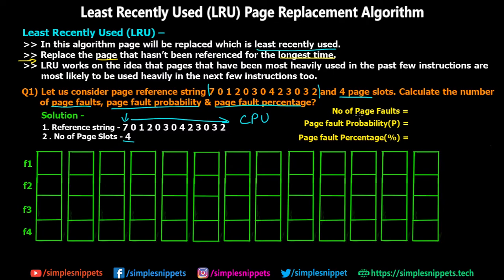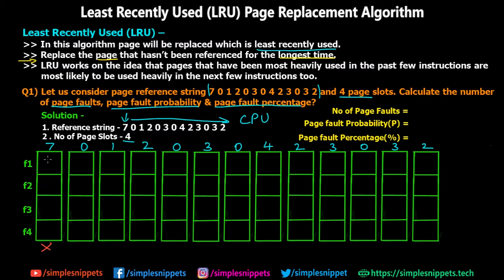Let me write down all the page reference string values for each step. Starting with step one: the CPU wants page 7, all frames are empty, so a page fault is generated and page 7 is brought into main memory from virtual memory. In step two, page 0 is requested but not present, so another page fault occurs and page 0 is loaded. Steps three and four similarly generate page faults as new pages 1 and 2 are loaded into the empty frames.